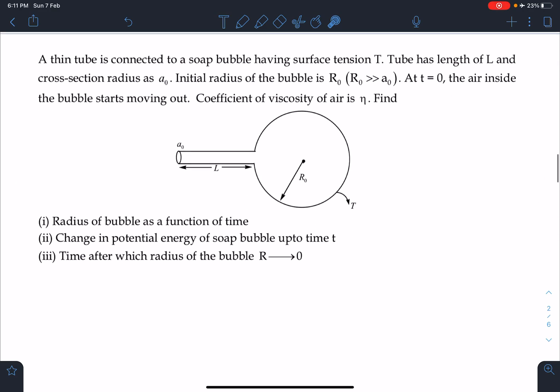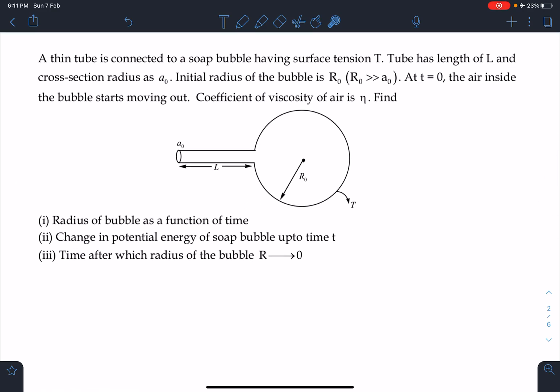Here is the statement of this problem. A thin tube is connected to a soap bubble having surface tension T. The tube has length L and cross section radius a₀. Initial radius of the bubble is R₀ and R₀ is very very large compared to the diameter or radius of this tube.